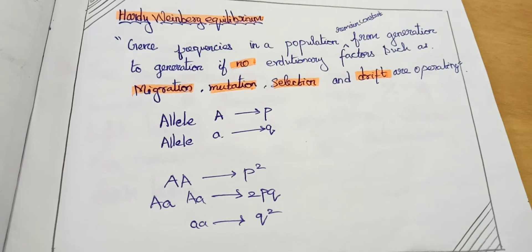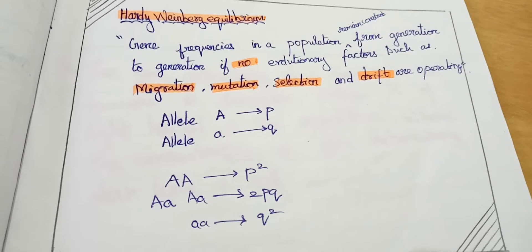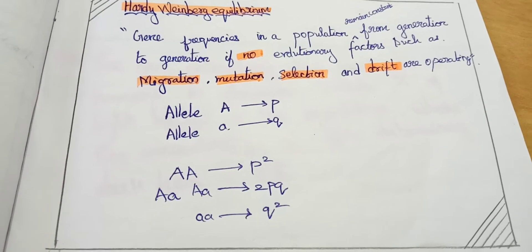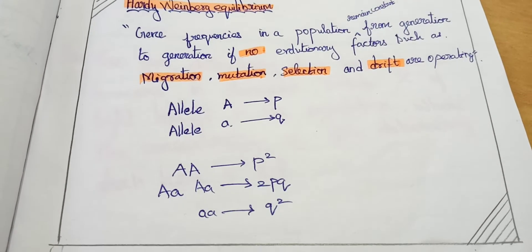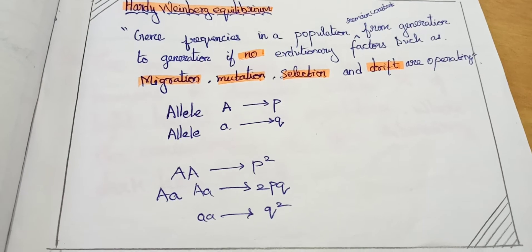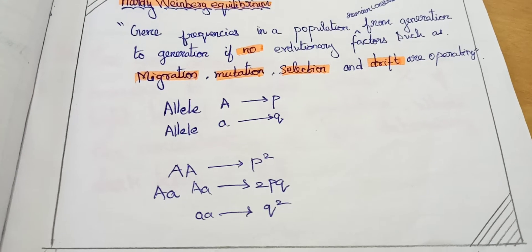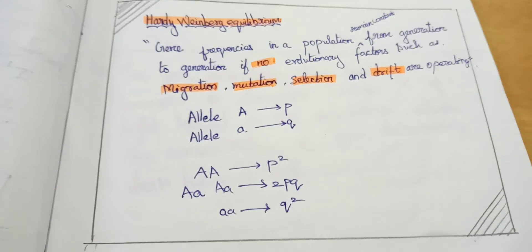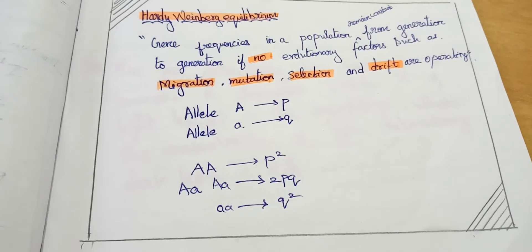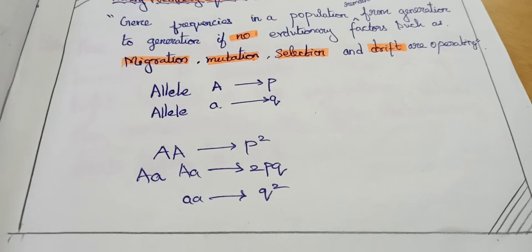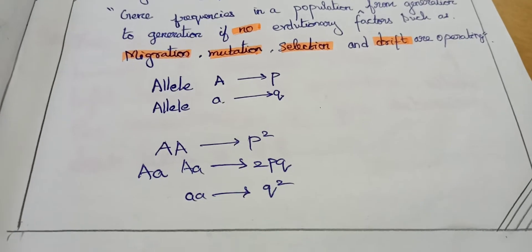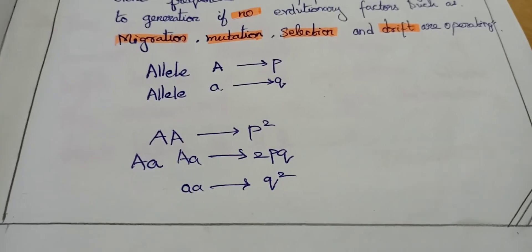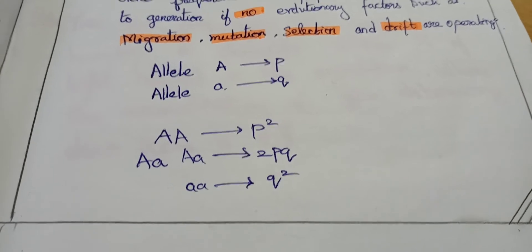Hardy-Weinberg equilibrium states that gene frequency in a population remains constant from generation to generation if no evolutionary factors such as migration, mutation, selection, and drift are operating. In this, we consider allele A as P, allele small a as Q, the homozygous dominant as P square, heterozygous as 2PQ, and homozygous recessive as Q square.